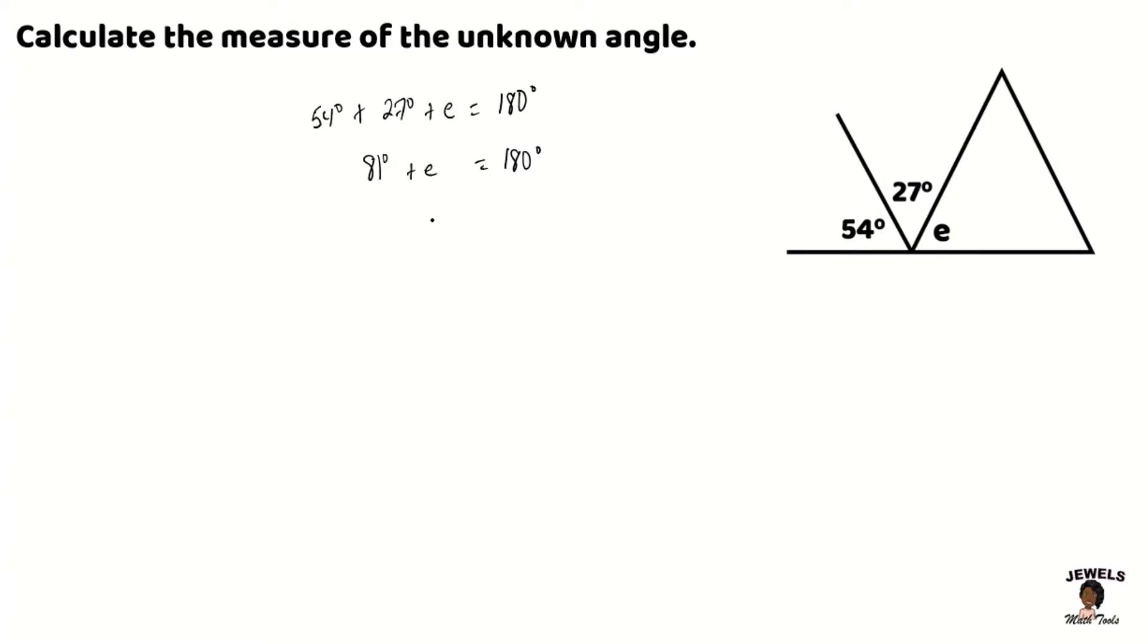Now we will be subtracting the 81 degrees from our 180 degrees. And in subtracting 81 from 180 degrees, we're going to find that angle E is equal to 99 degrees.